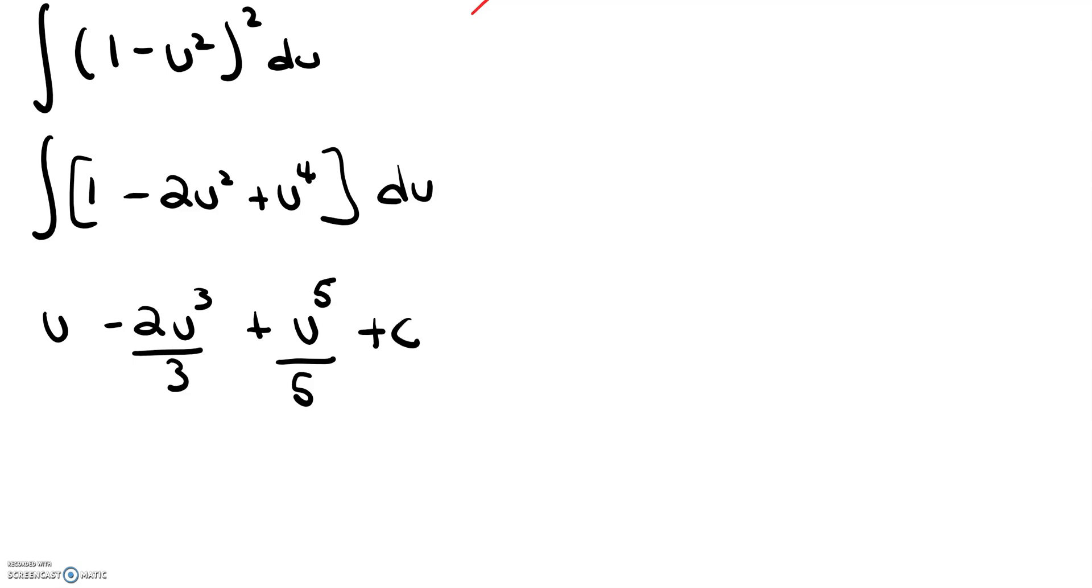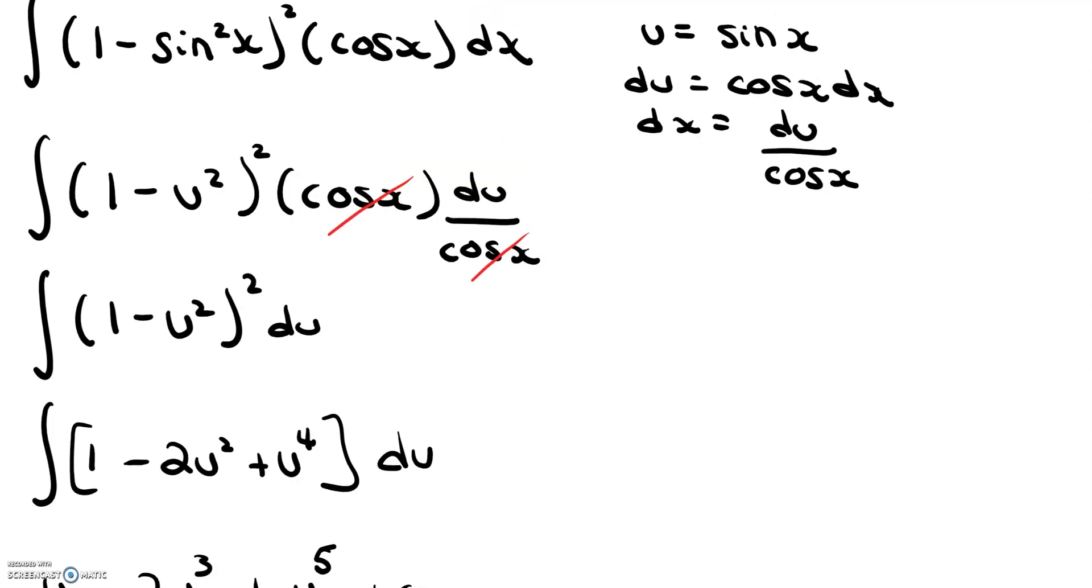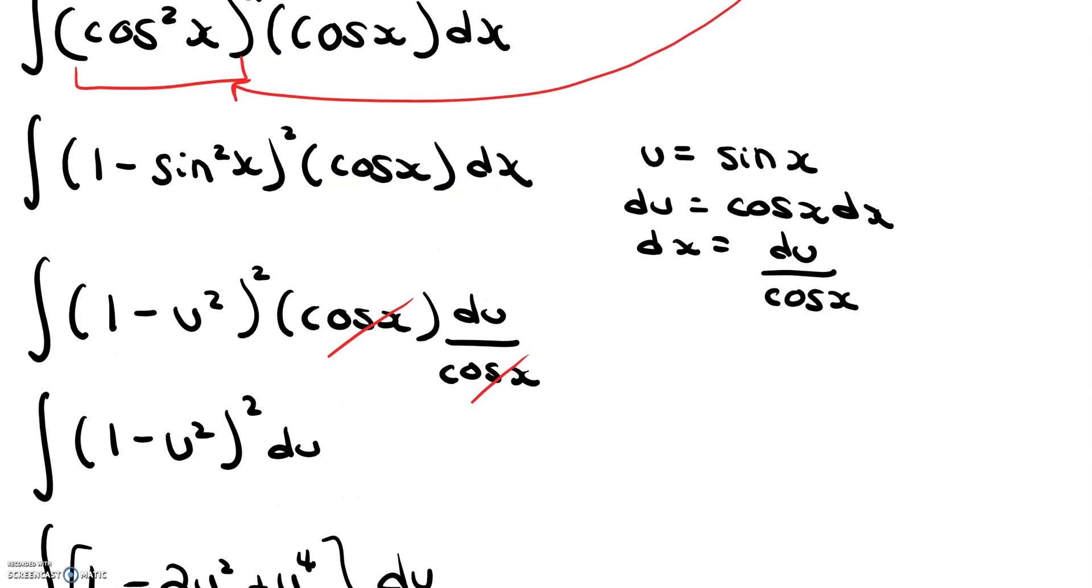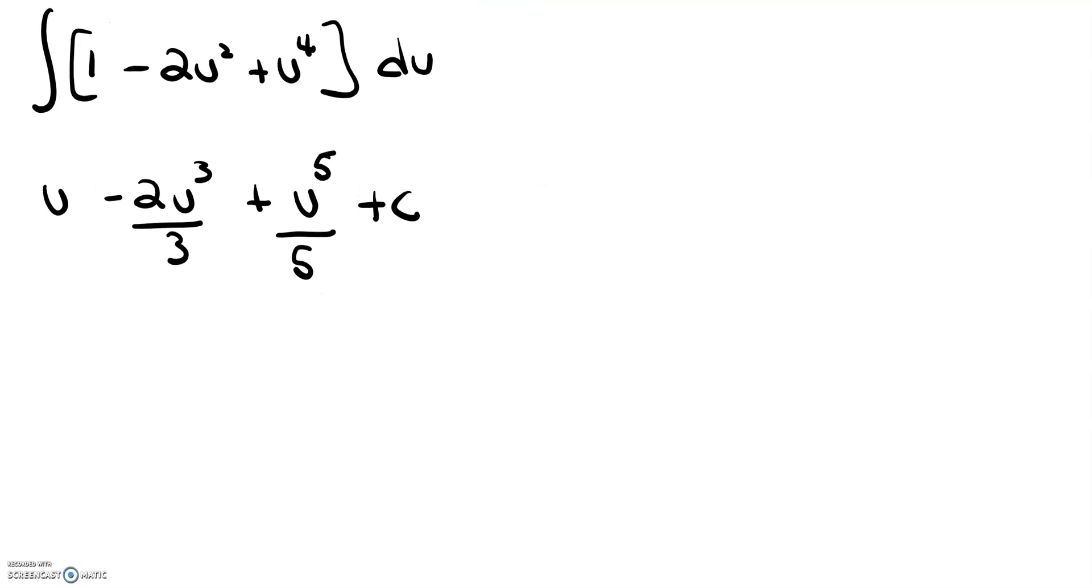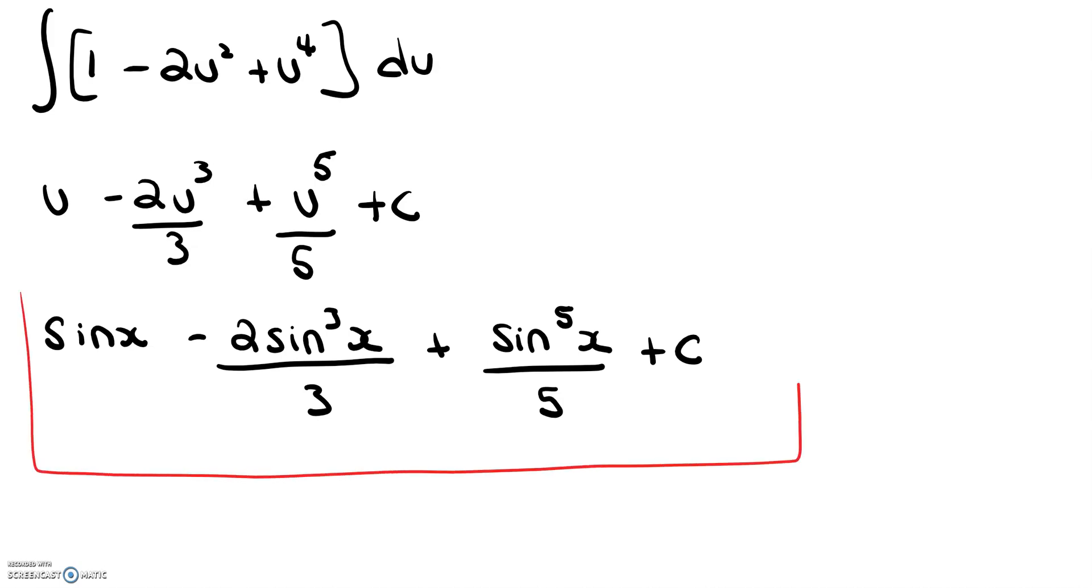And now our last step is to substitute back for u. We recall that u is equal to sine x. So if we go back and substitute all of this, we get sine x minus 2 sine cubed x divided by 3 plus sine to the fifth x over 5 plus c. And that would be our final answer.